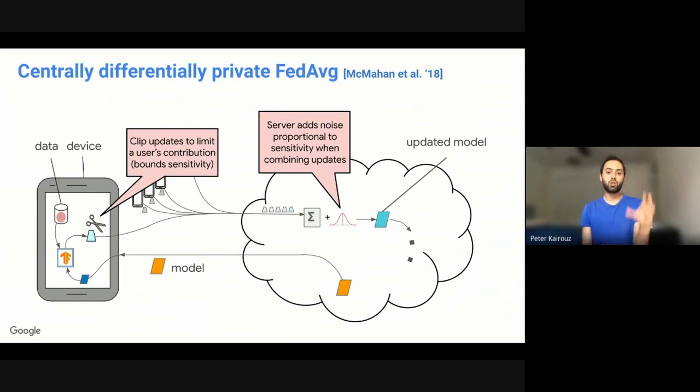This is called central differentially private algorithms or a centrally differentially private federated average. What we do is we make sure that the users take the model update and do a clipping process on it that restricts the L2 norm of this vector that's representing the model update. This essentially limits the contribution of the user. And all the participants in the round send their clipped model updates to the server, so their contributions have been limited. Each one of the contributions has been clipped and limited. They cannot send arbitrarily large contributions because of the norm projection process. And then the server aggregates these clipped updates and adds Gaussian noise. We can prove that the combination of clipping on the client and Gaussian noise addition on the server achieves differential privacy.